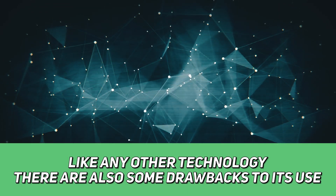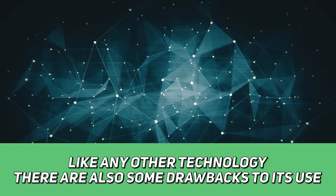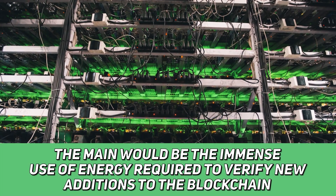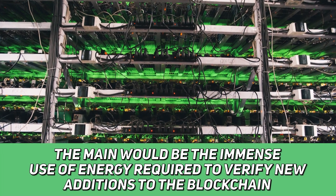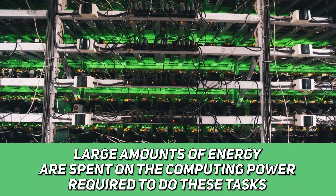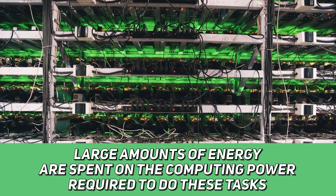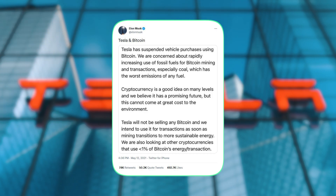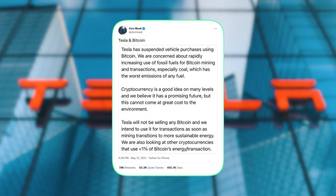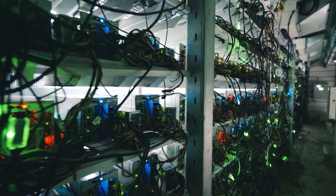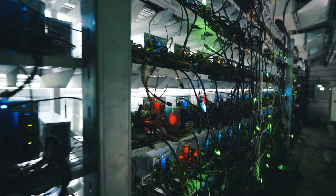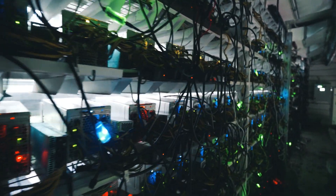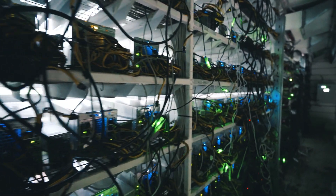But like any other developing technology, there are also some drawbacks. The main one is the immense use of energy required to verify new additions to the blockchain — large amounts of energy are spent on the computing power required. Even Elon Musk discussed via his Twitter account the high energy usage, saying that Tesla would suspend Bitcoin purchases due to the high level of CO2 emissions involved in Bitcoin mining. And due to the fact that data is permanently stored on the blockchain, users can't remove any of their data.